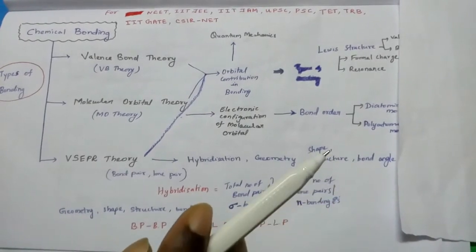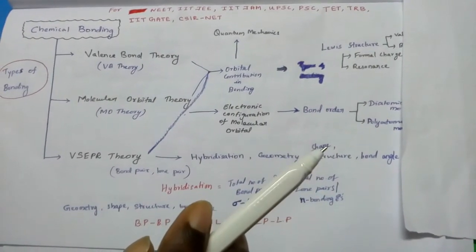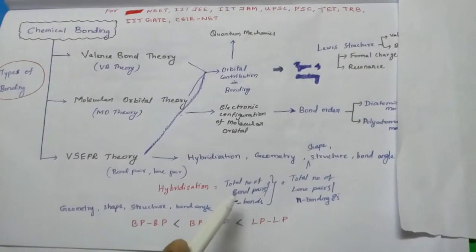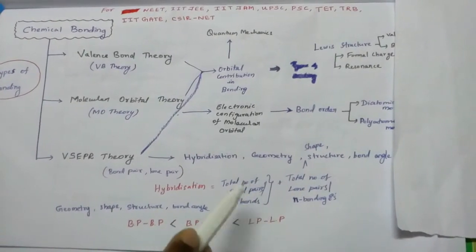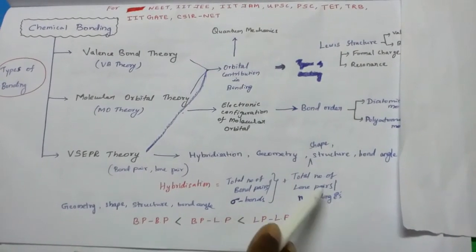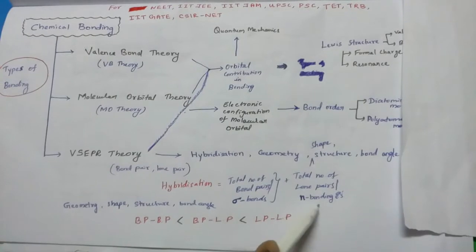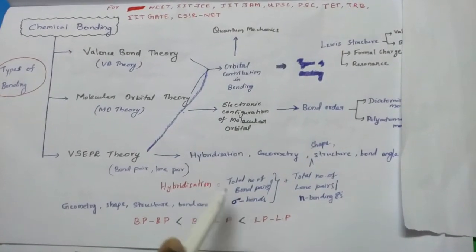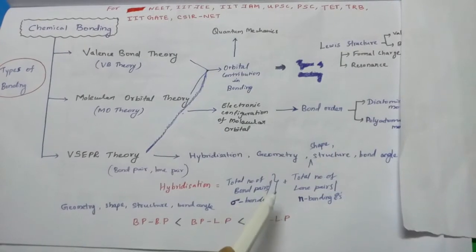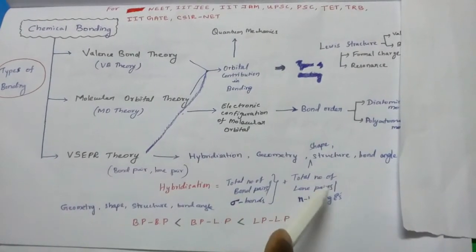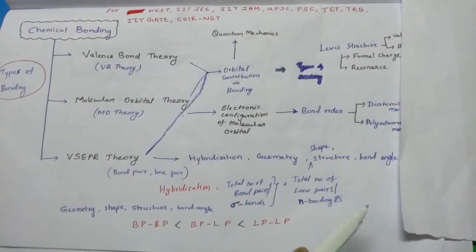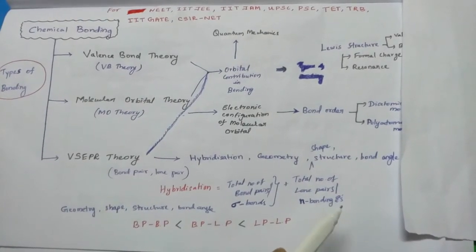In the previous video, I have explained the hybridization tricks. What is the formula for hybridization? Hybridization is equal to the total number of bond pairs or sigma bonds plus the total number of lone pairs or non-bonding electrons.